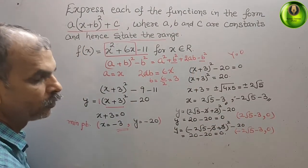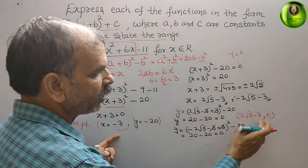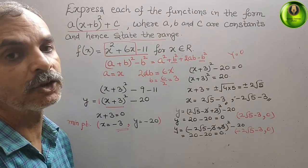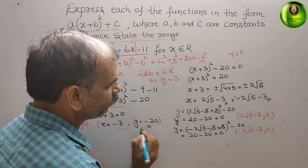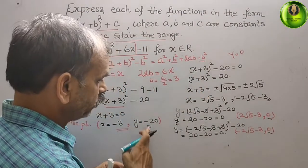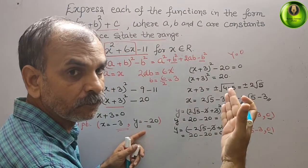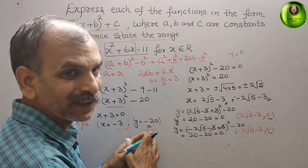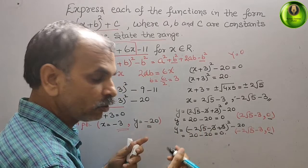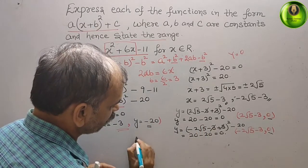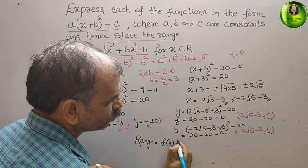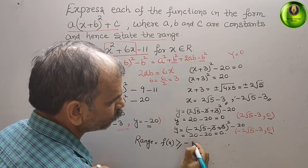Looking at all three points, we can see the y values are -20, 0, and 0. The zeros are positive and -20 is the minimum, so the values of y lie above -20. Therefore the range is f(x) ≥ -20.